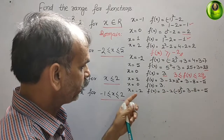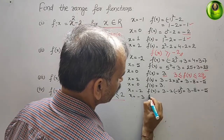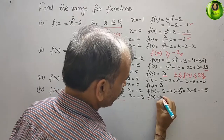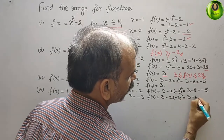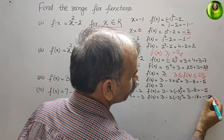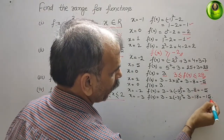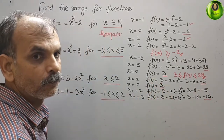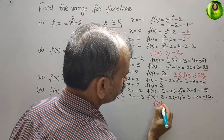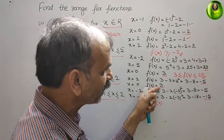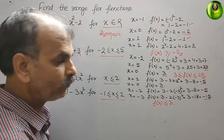We also try x = -3: f(x) = 3 - 2(-3)² = 3 - 18 = -15. Now we have values: -5, 3, -5, and -15. Since x ≤ 2 with no lower bound, the function can go to negative infinity. The maximum value is 3. Therefore the range is f(x) ≤ 3.